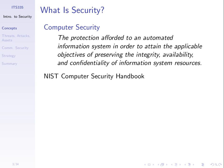First, a definition from one organisation. Computer security is the protection afforded to an automated information system in order to attain the applicable objectives of preserving integrity, availability and confidentiality of information resources. This was written by NIST, the National Institute of Standards and Technology in the US. They create many standards, especially in computer security.